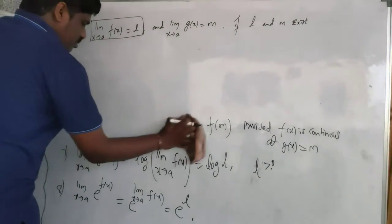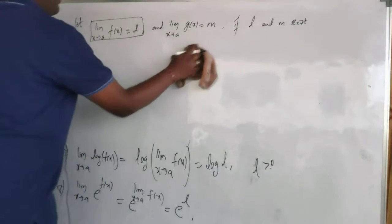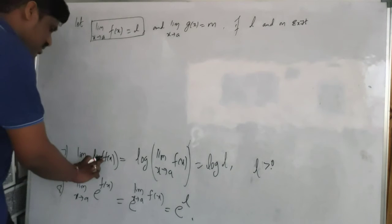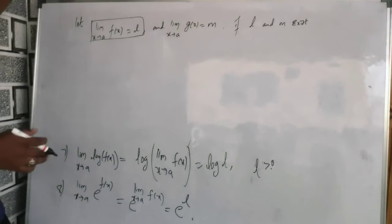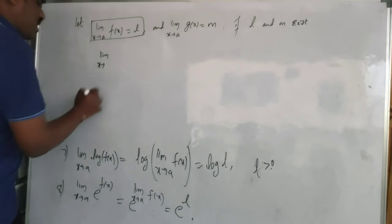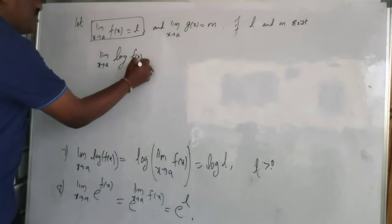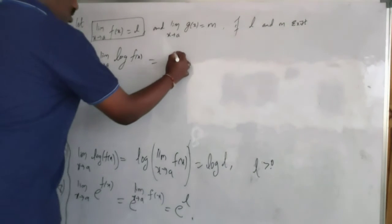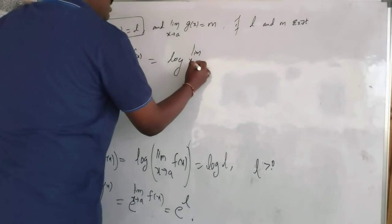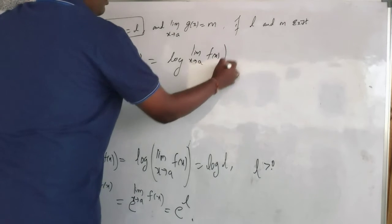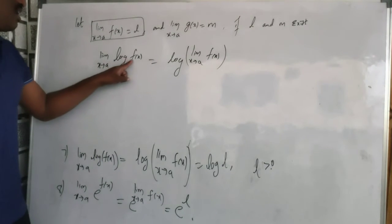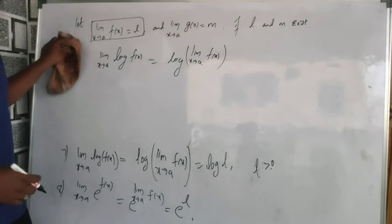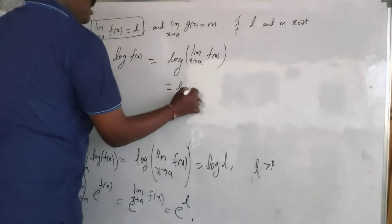Another property: limit extending to a of log f(x). Whenever you have log of f(x), the limit can pass inside the logarithm to f(x). So I can write it as log of limit extending to a of f(x). Since that limit value is l, the answer is log l.